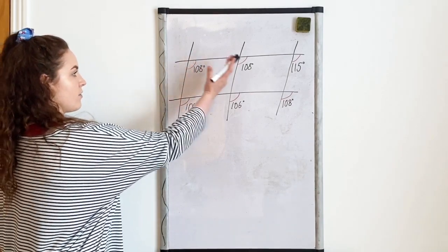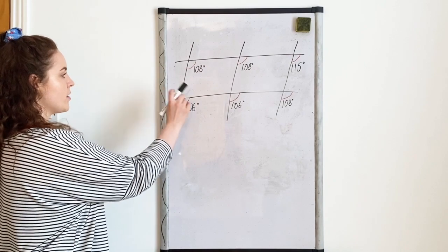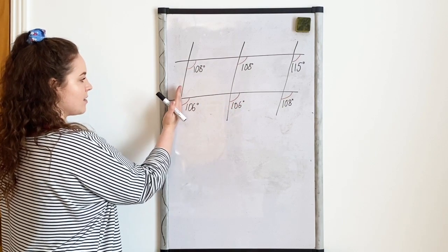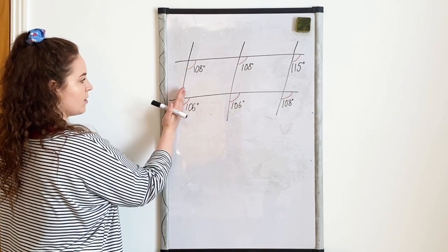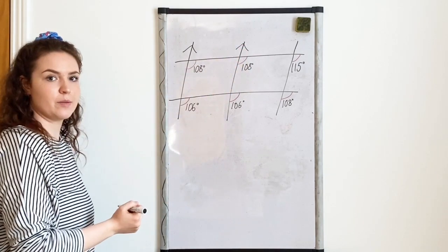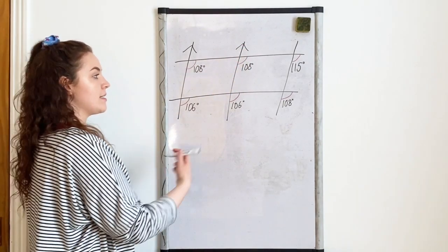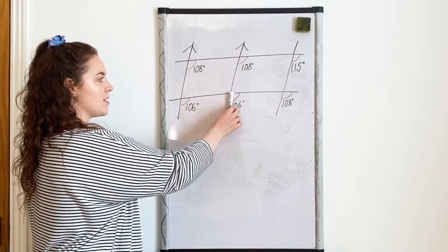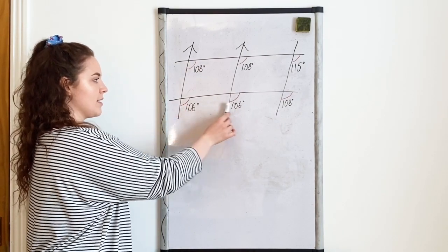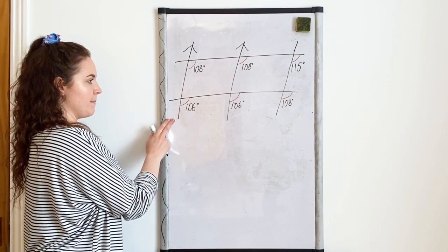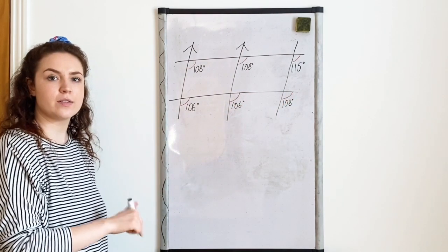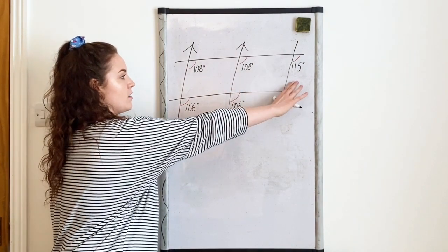Now let's focus on these three lines here and see if any are parallel. From here to here, I've got two corresponding angles and they are both the same. That means when I shifted this angle along, this line must be going in the same direction, so these two lines are going to be parallel. Now I just need to see whether this third one is also parallel. If it is parallel to this one, then because these two are parallel it will also be parallel to this one. If it is not, then it won't be parallel to this one here. Focusing on these two: 106 and 108 are my corresponding angles — they are not the same, so therefore these two lines are not parallel.